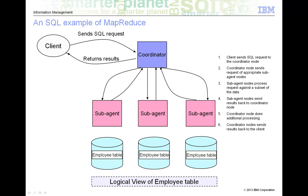Once the coordinator node has all the results from the sub-agents, it sorts the records on job classification and computes a total for each job classification, then returns its results to the client. In this example, the work done by the sub-agents is the mapping phase, and the work handled by the coordinator is the reduce phase. The analogy breaks down somewhat in the case of Hadoop MapReduce, in that Hadoop MapReduce generally provides multiple reducer tasks to finalize the result and the output.